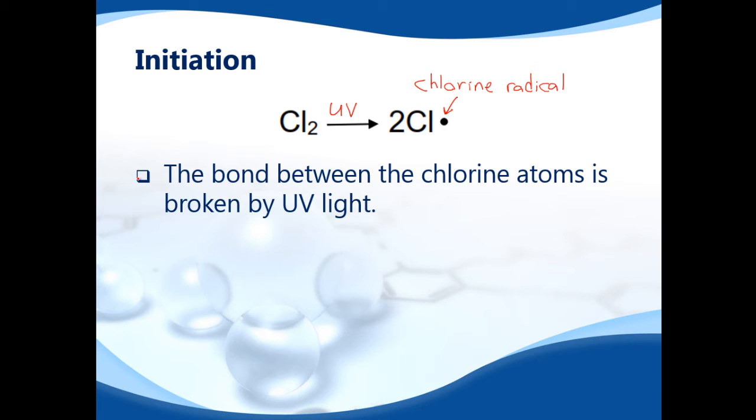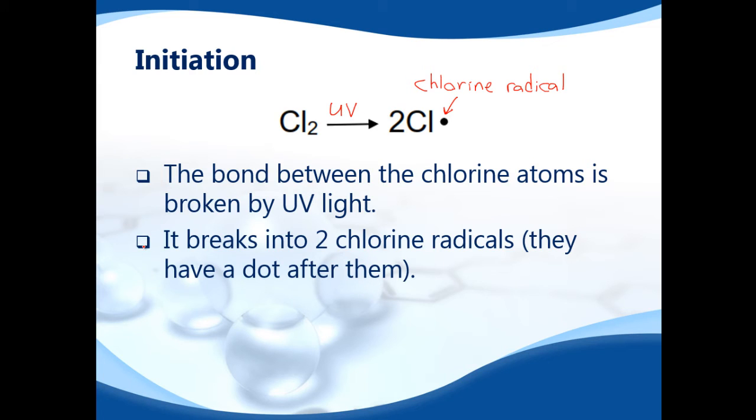The bond between the chlorine atoms is broken by UV light. You should always have the UV above the arrow. It breaks into two chlorine radicals. They have a dot after them.